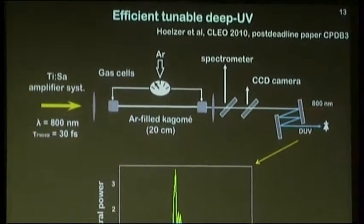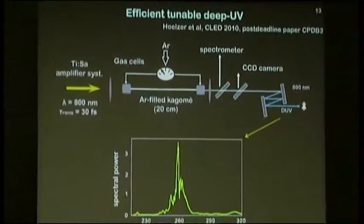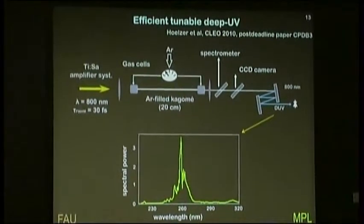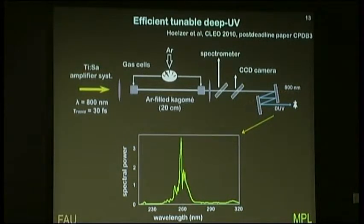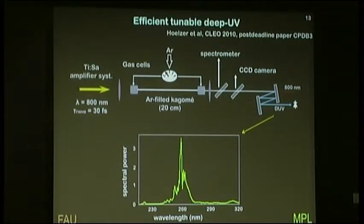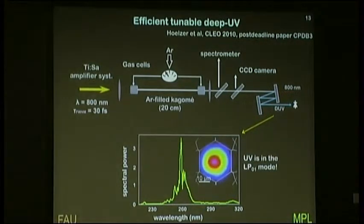What we saw that really surprised us is that under the right conditions of pressure and pulse energy, we saw very strong ultraviolet light coming out of the fiber. Quite dramatic, you could see it lighting up. In this particular measurement, it's centered around 260, which is not the third harmonic of the Ti:sapphire. This is not a third harmonic process. And in particular, the light is generated in the fundamental mode of the core.